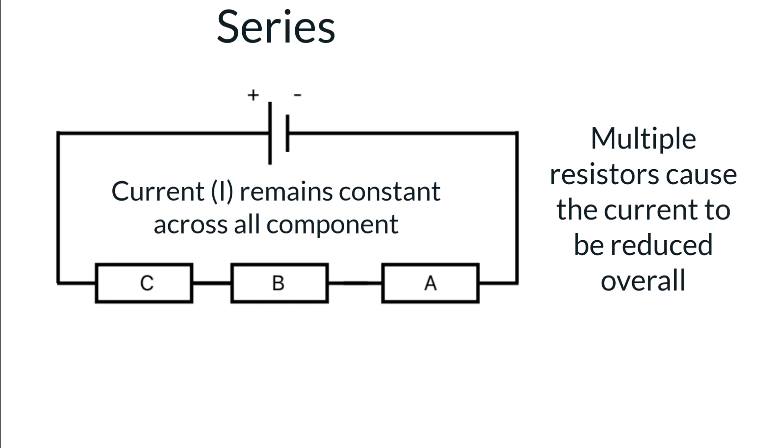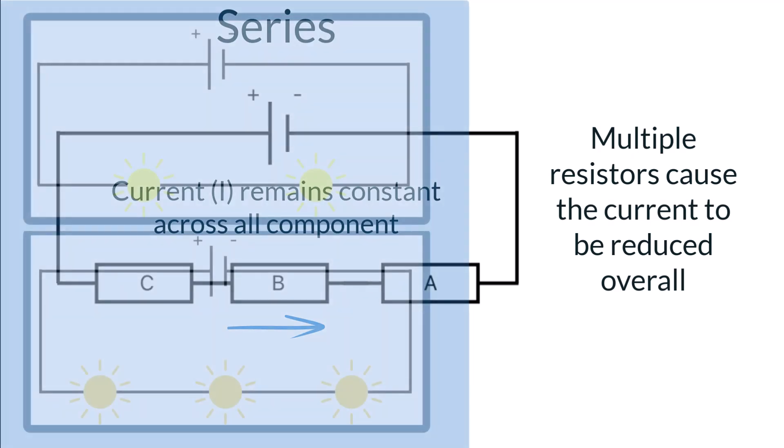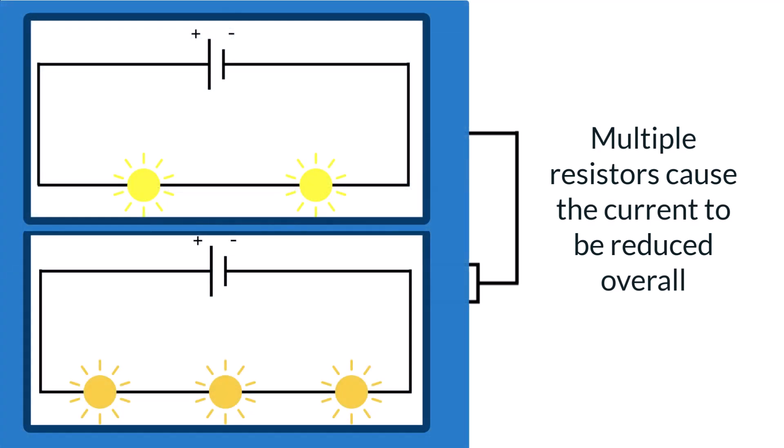To illustrate this, a circuit with a power source and two lightbulbs compared to a circuit with the same power source and three lightbulbs will result in the circuit with two lightbulbs being brighter. This is because with the additional resistance from the third lightbulb, there is less energy being transferred to each lightbulb in the circuit.